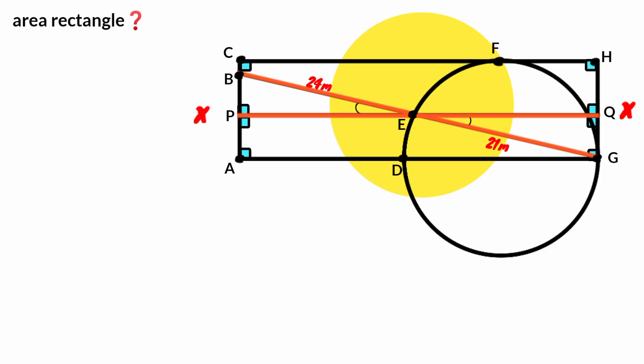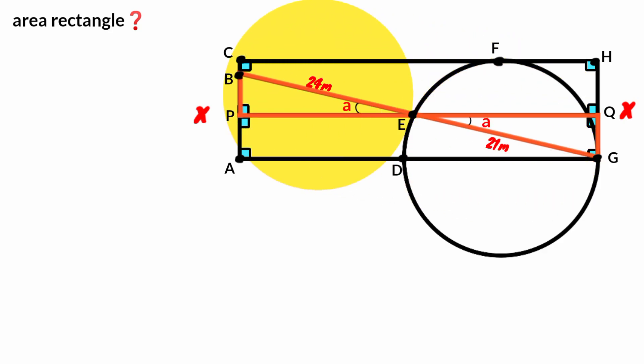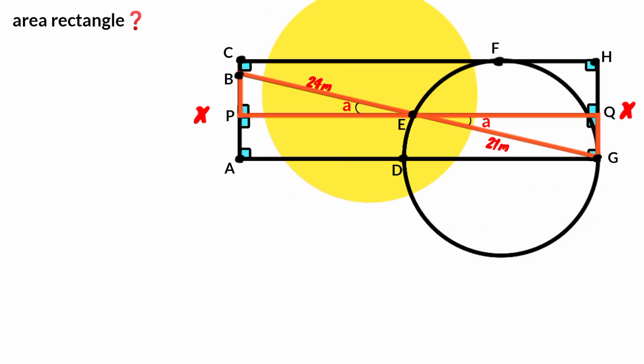Vertically opposite angles are equal, so if you let this be A, this must also be A. Now look at this triangle — it is a right angle triangle and it has an angle A. Same for this triangle — it is also a right angle triangle and it has an angle A. That makes them similar.